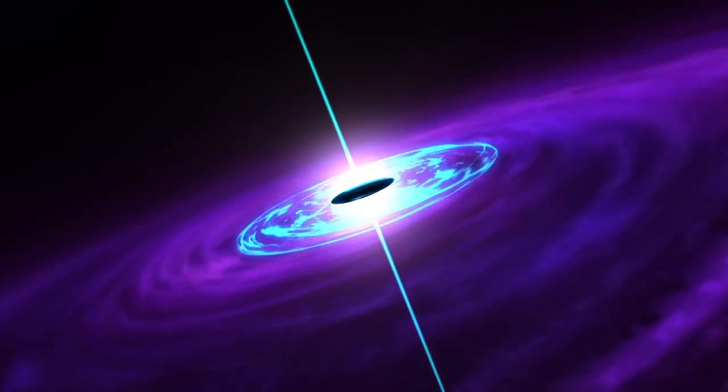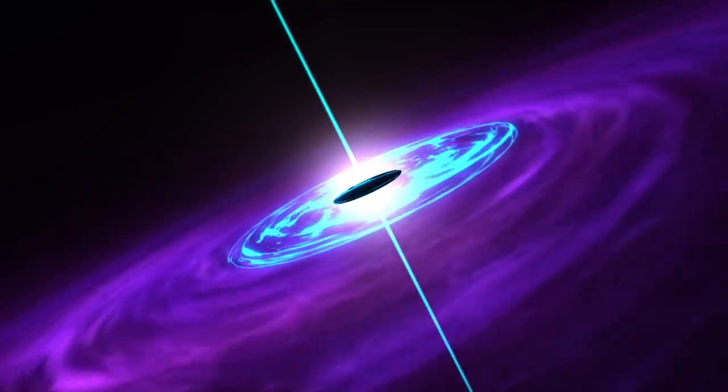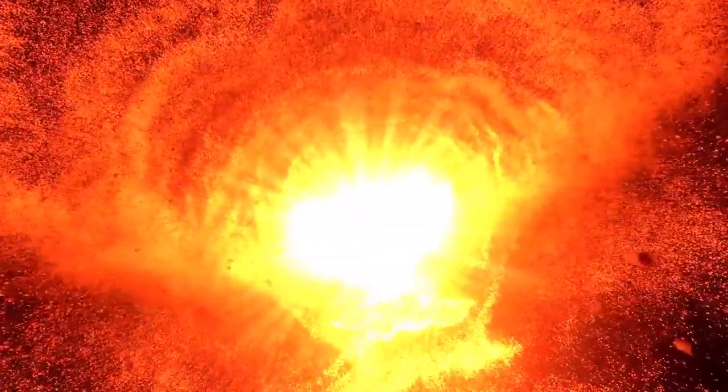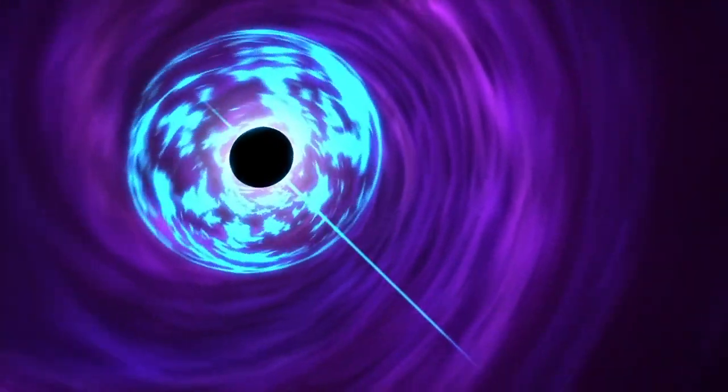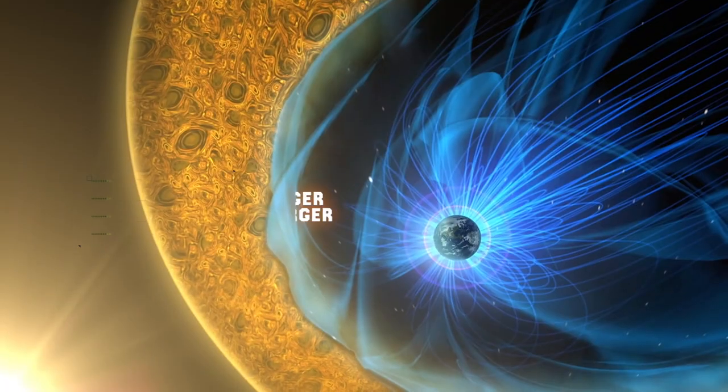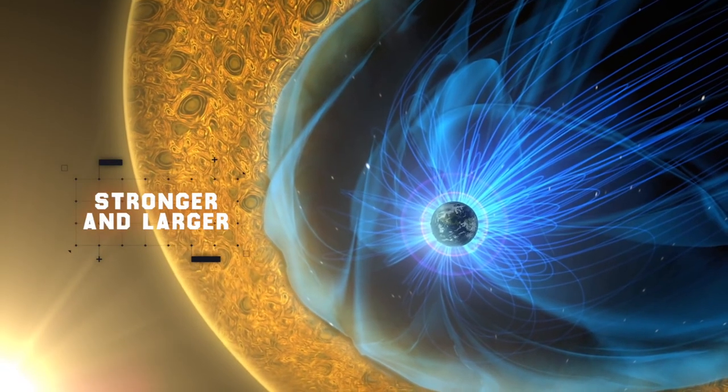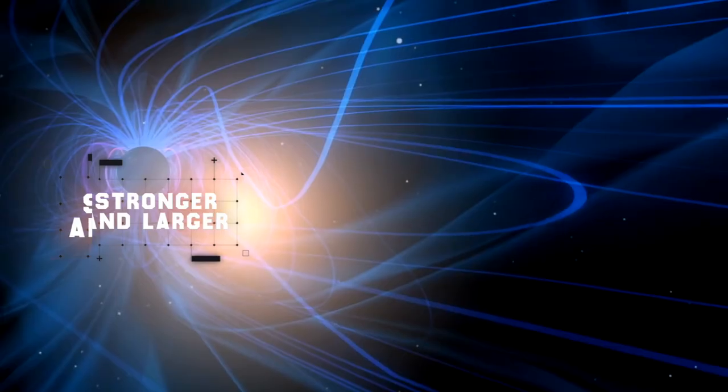Black holes don't generate magnetic fields themselves, but the dust and gas that swirl around them do create an extremely powerful magnetic field that envelops the black hole, many orders of magnitude stronger and larger than the one generated by the Earth.